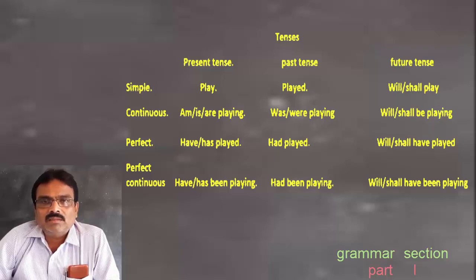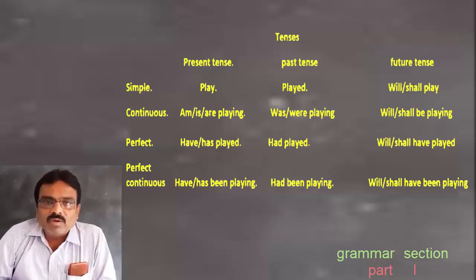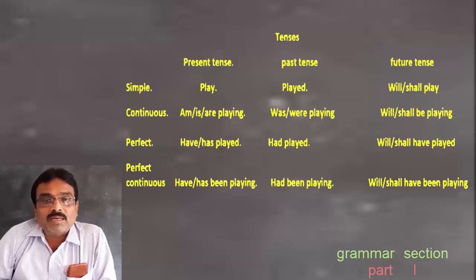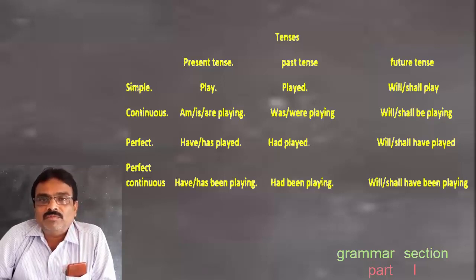Just as 'ate' is past tense and 'eaten' is past participle, whenever a BE form or HAVE form comes before the verb, those verb forms are automatically past participles. One thing to remember: in English, past participle forms of verbs are used in two conditions — in perfect tenses, where they take a HAVE form before them, and in passive sentences, where they take a BE form before them.